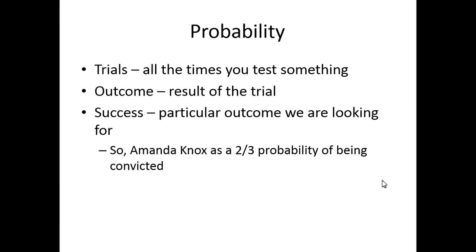So how do we do the objective part? We would take all the trials, all the times we would test something, the outcomes of the trials, the likelihood of a success, that's the thing where you get what you're looking for, over the total number of trials. So likelihood of successful outcomes over total trials. The Amanda Knox case where she got convicted twice in Italy and once overturned, just two-thirds probability of being convicted.